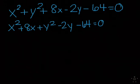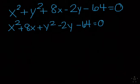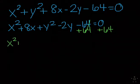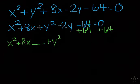After I get all the variables together, I'm going to move the constant to the other side of the equation by adding it. Remember inverse operations still apply. So I'm going to have x² + 8x, and I'm going to leave a space, plus y² - 2y. I'm going to leave a space equals 64.